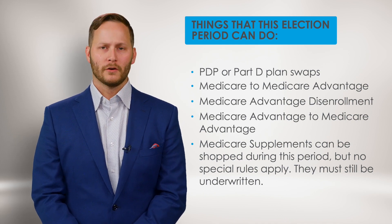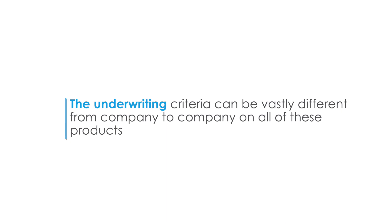Medigap plans must still be underwritten — meaning they require answering health questions to change from one plan to another to get a better price or a different plan. This applies when someone is outside of their Medicare supplement open enrollment period, which is six months from their 65th birthday or their Part B effective date. Hospital indemnity and cancer insurance can use underwriting criteria as well, and the underwriting criteria can be vastly different from company to company on all of these products.